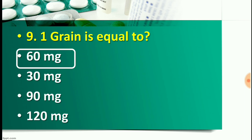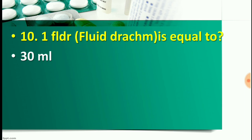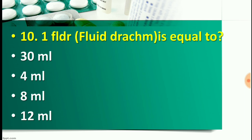Question number ten: One fluid drachm (fl dr) is equal to — Option A: 30 ml, Option B: 4 ml, Option C: 8 ml, or Option D: 12 ml. The right answer is Option B — 4 ml. One fluid drachm equals 4 ml. Note: if only 'drachm' is written without 'fluid,' then it equals 4 gram. So one fluid drachm = 4 ml, and one drachm = 4 gram.